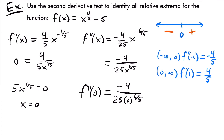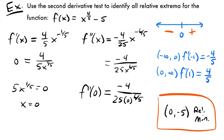Plugging 0 into the original function: 0^(4/5) - 5 = 0 - 5 = -5. So the y-value is -5, meaning our relative minimum is at (0, -5). That is the only relative extrema for this function. We tried the second derivative test, it failed, so we used the first derivative test to determine the relative minimum.